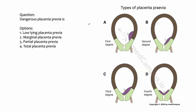What is placenta previa? It is the abnormal location of the placenta — where the placenta is located either very near to the internal os or it is located over the internal os. There are four types of placenta previa. The terminology varies: some say degrees, some say types, and some say stages of placenta previa — all are synonyms.